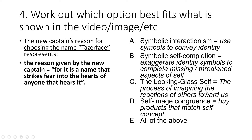The looking glass self is the process of imagining the reactions of others towards us. If you look at Taserface's reason, you could say that he is imagining that others will experience fear when they hear the name Taserface. So the looking glass self is a good fit. Finally, self-image congruence is when we buy products that match our self-concept — but in this case, Taserface isn't a product that has been bought. So we can discount self-image congruence. Based on our analysis, the looking glass self, option C, is the best option available.